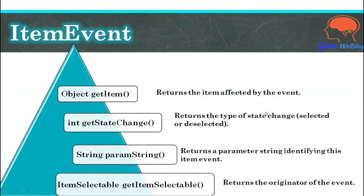When you talk about the ItemEvent class, it contains four methods: getItem, getStateChanged, paramString, and getItemSelectable.